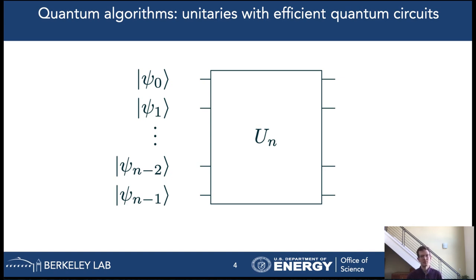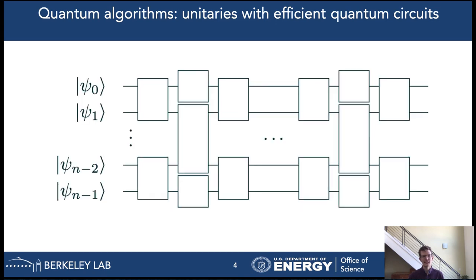However, there is still a problem here. The quantum computer cannot perform such a global transformation acting on all qubits simultaneously. Instead, we will have to synthesize the unitary into smaller local operations acting on 1, 2, or at most just a few qubits. This step is the quantum circuit synthesis problem that we want to solve.